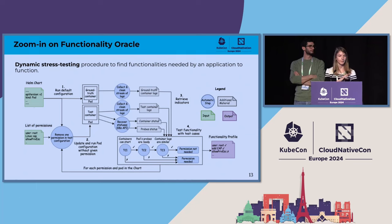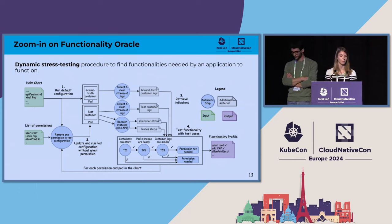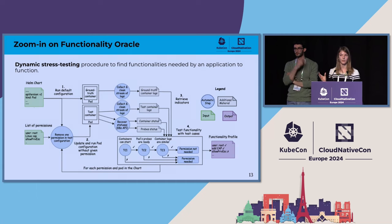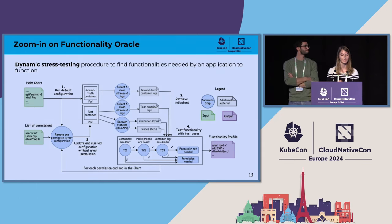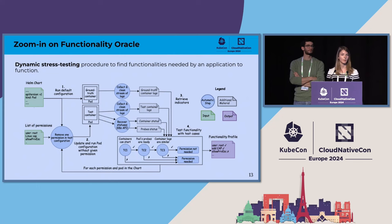I will now show the tool we developed, named the Functionality Oracle. It enables finding the minimal set of functionalities needed by the application to function, following the principle of least privilege. As a first step, I choose one Helm chart — it could also be a Kubernetes manifest or a YAML file — and run it in its default configuration, with the permissions granted by default as defined in the Helm chart. This produces what we call the ground truth container.